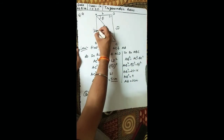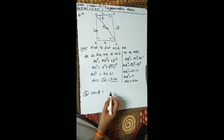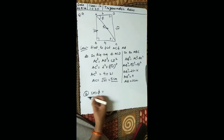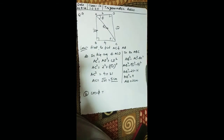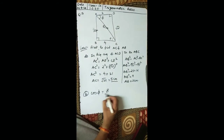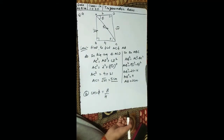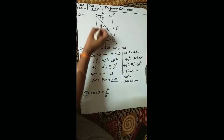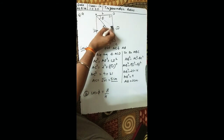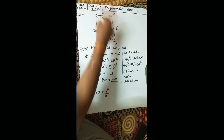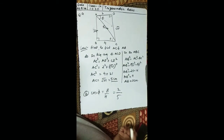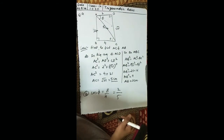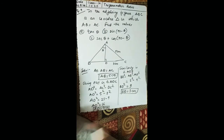Solving gives AB equals 3 centimeters. For part (b), finding cos φ: the angle φ is given, and base upon hypotenuse is the formula. With phi as the angle, the opposite side is the perpendicular, so the adjacent side is the base. Base is 2 and hypotenuse is 5, so cos φ equals 2 upon 5. You can similarly complete the remaining parts.